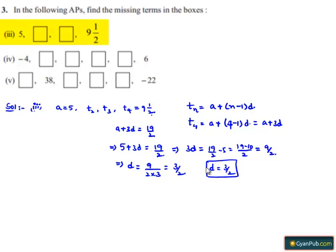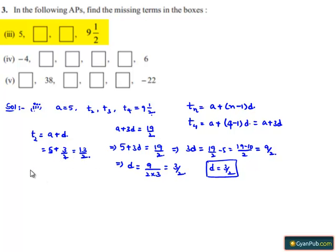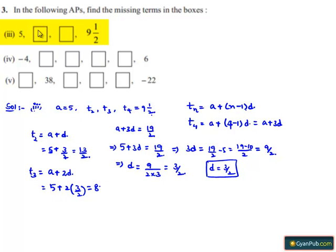Now we can find the second and third terms. T2 = a + d = 5 + 3/2. Taking LCM 2, that gives (10 + 3)/2 = 13/2. For T3 = a + 2d = 5 + 2 × (3/2). The 2s cancel, leaving 5 + 3 = 8. Therefore the missing blanks are 13/2 and 8.